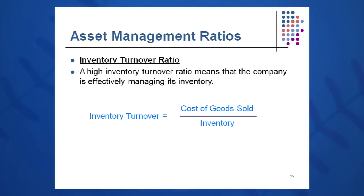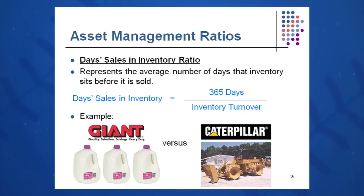Inventory turnover is cost of goods sold divided by inventory — how many times do I turn over that inventory? The faster, the better. From that, I can calculate day sales in inventory: 365 days divided by inventory turnover. For example, in the milk business you want to turn that inventory over very quickly within the day — you don't want it sitting on shelves for days and weeks causing spoilage. For Caterpillar's large equipment, however, it's not as important to turn it over daily; perhaps selling 12 big units in a year is very good.